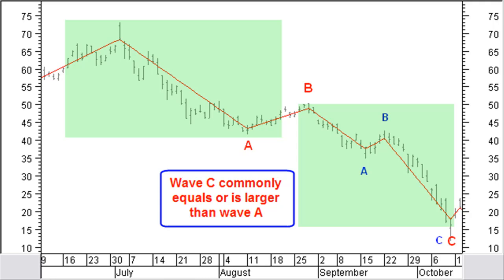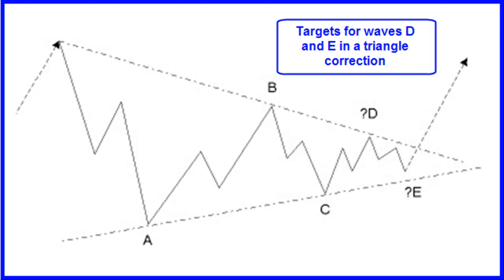Wave C in a triangle is generally 76.4% of wave B. For an inverted widening triangle this is commonly 123.6% of wave B. At the end of wave B, draw a trend line through the beginning of wave A and the end of wave B. You now can see a target for wave D, anticipating that a triangle correction is developing. You will get a confirmation at the end of wave C. At the end of wave C, draw a line through the end of wave A and wave C. You now can see the target for wave E. Many times wave E will not reach this trend line; conversely it may pass it very shortly, next continuing the basic trend.